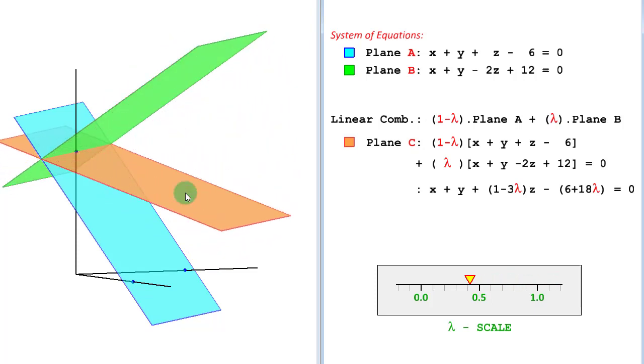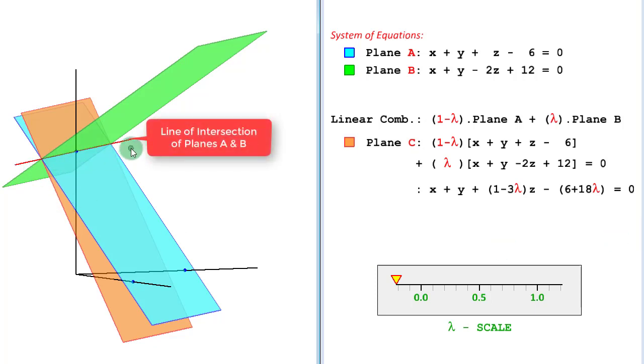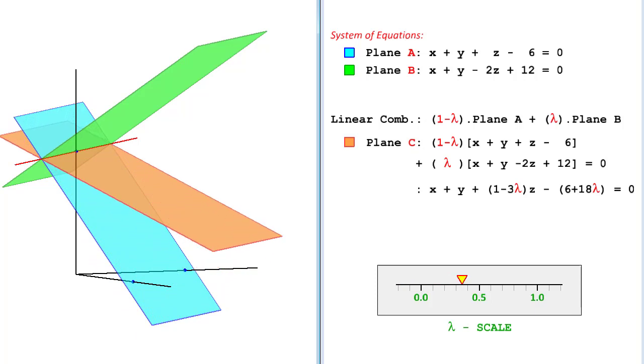It is going to rotate while keeping something preserved, keeping something unmoved, unchanged. What is that? That is going to be the line of intersection of these two planes. What the two planes have in common or the locus of their solutions. So let's plot that line so we can track it better. Here is the line of intersection of the original planes. You will see it is always passing through that line. That is the nicest property of linear combinations. They do not change or disturb the solution of the system.